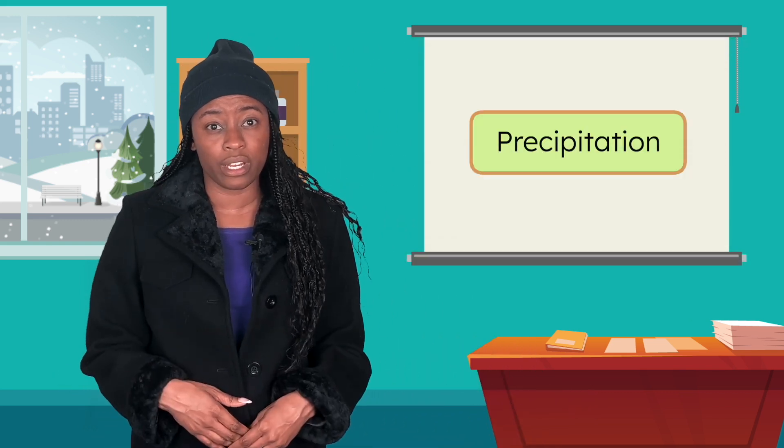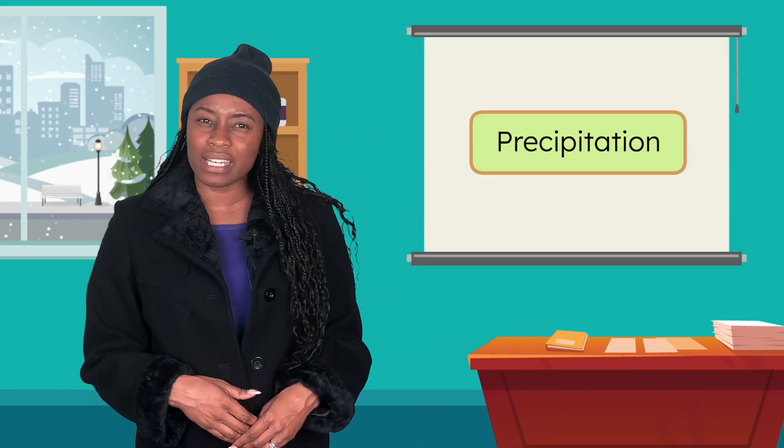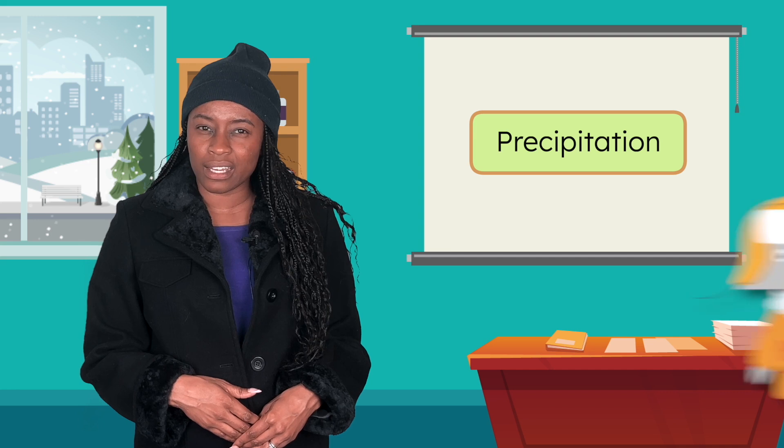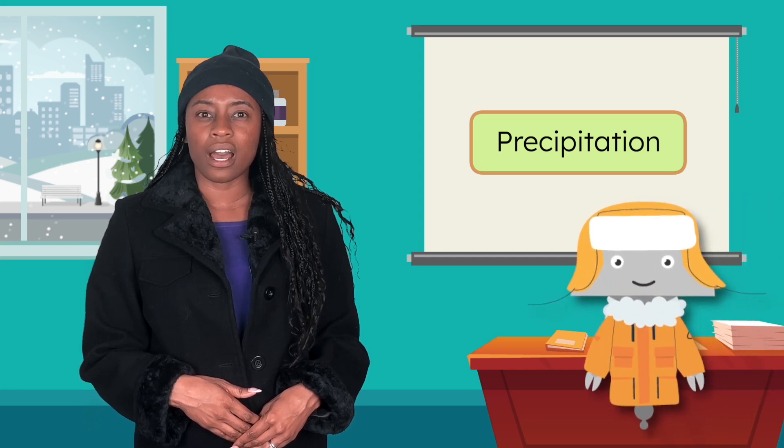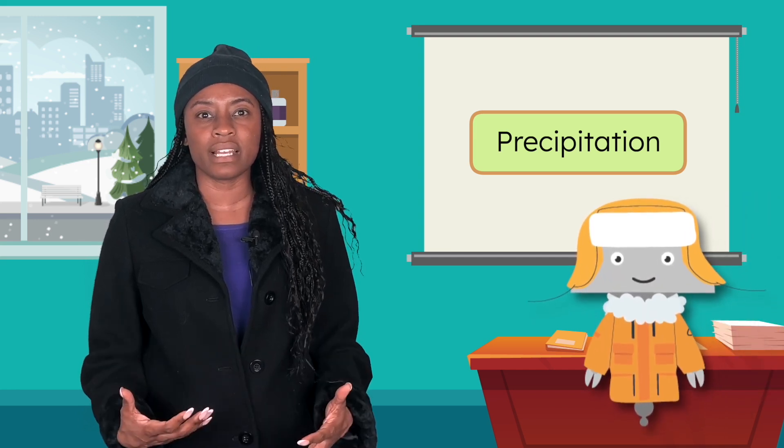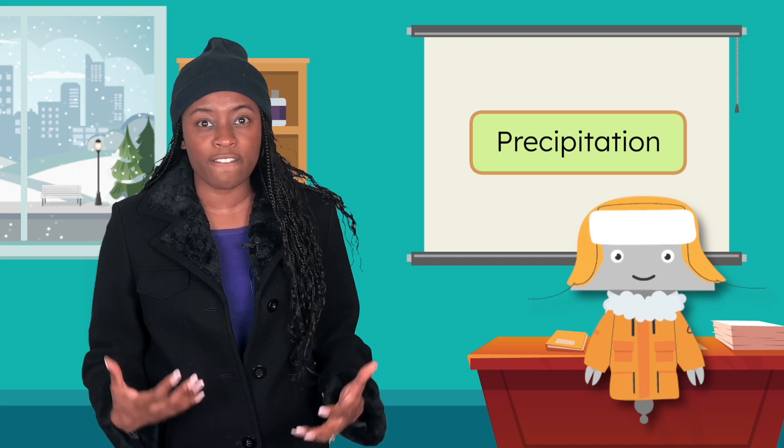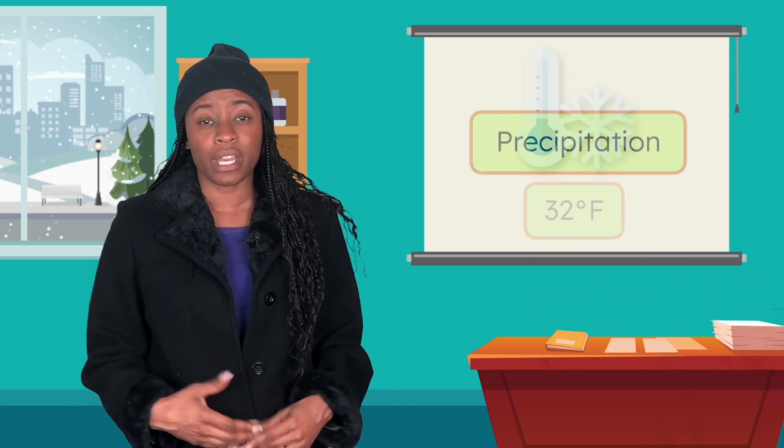Okay, so what is snow? Well, it falls from the sky, and we already know that's called precipitation. But how does it happen exactly? Mia says it has to be really cold. Freezing, to be exact. Freezing means the temperature outside is 32 degrees Fahrenheit or below.